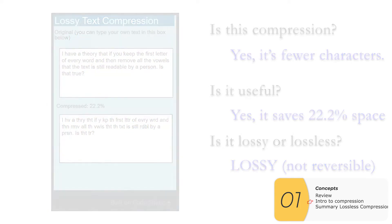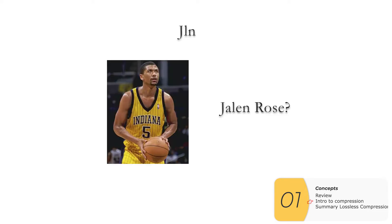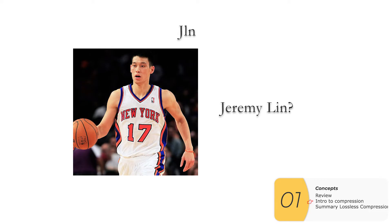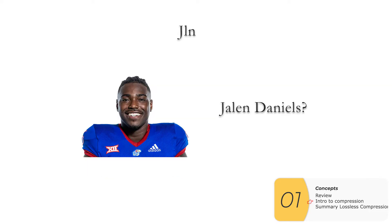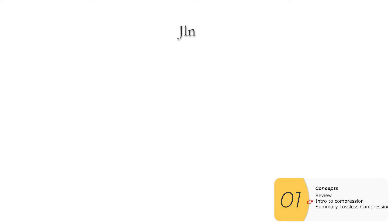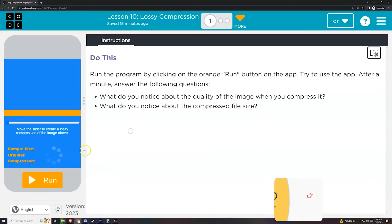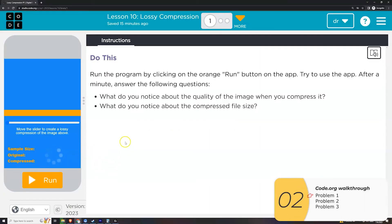You might say it's reversible, but here's an example where dropping vowels is not reversible. If I have 'jln,' I could be talking about Jalen Rose the basketball player, Jeremy Lin the basketball player, Jalen Daniels the football player, or Jalen Hall the actor. There's no way to get back to the original with 100% accuracy from the compressed version 'jln.' If it's not fully reversible, it's lossy.